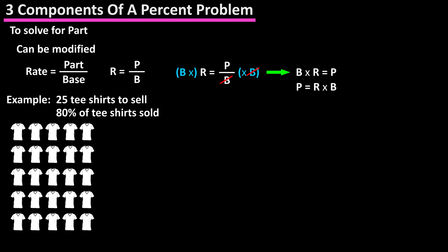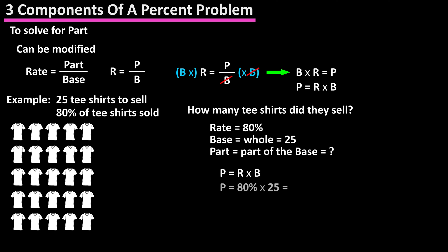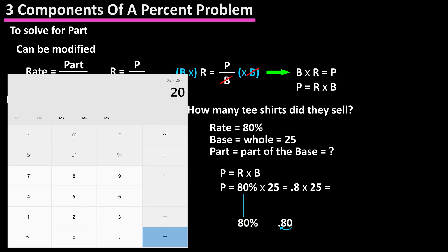For example, let's say that you give a friend 25 t-shirts to sell, and a week later they tell you they sold 80% of them. How many t-shirts did they sell? Here we know the rate is 80% and the base is 25 total t-shirts, so we need to solve for part. Part equals rate times base. To convert 80% to a decimal, we drop the percent sign and move the decimal two places to the left to get 0.8. Using a calculator, 0.8 times 25 gives a final answer of 20 — they sold 20 t-shirts.